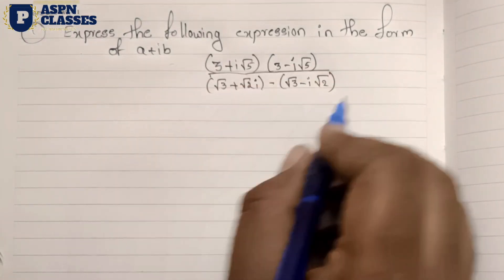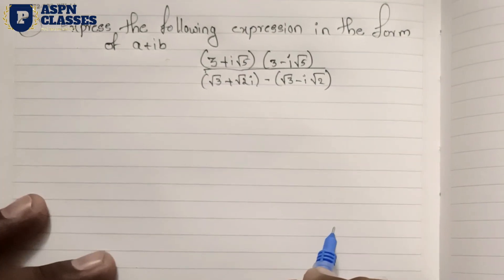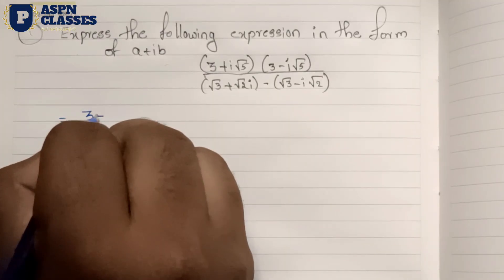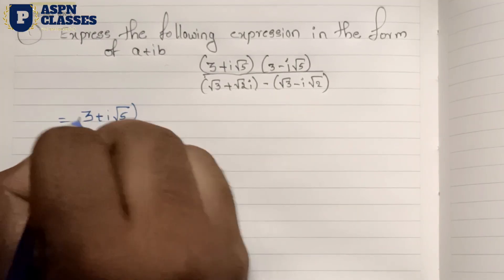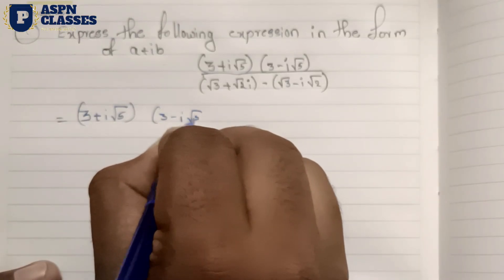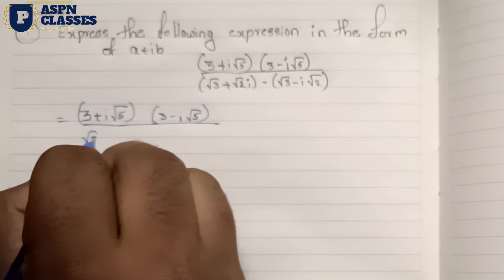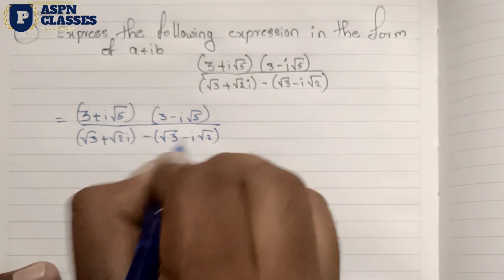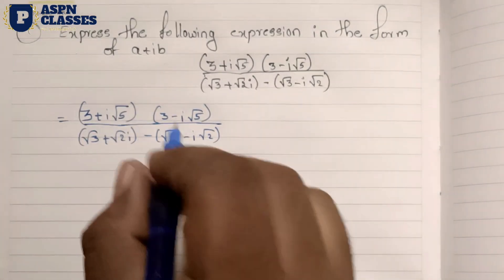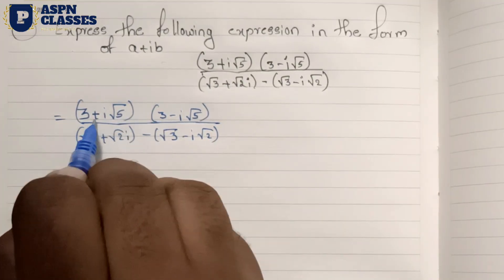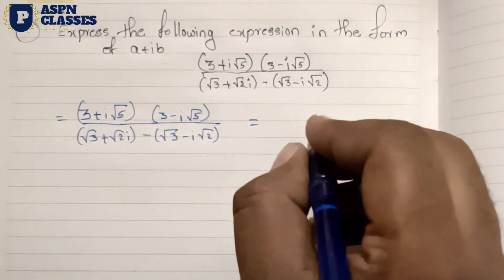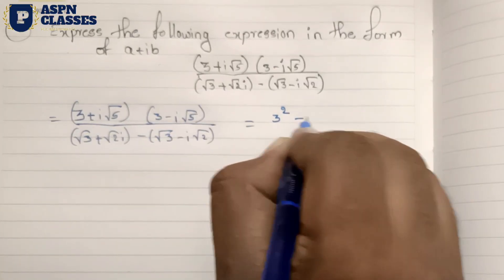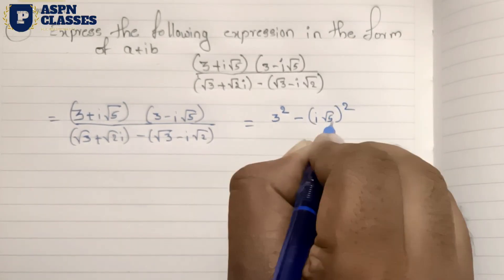It is very simple. I will solve it using the easy method. I will apply the (a + b)(a - b) format, using the a squared minus b squared formula to simplify both the numerator and the denominator.